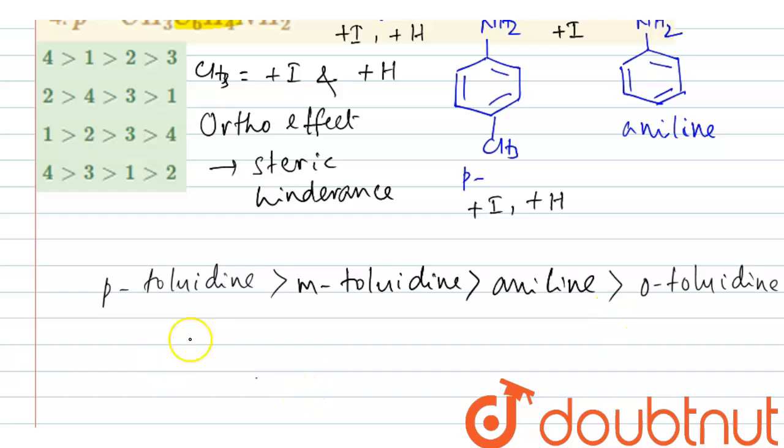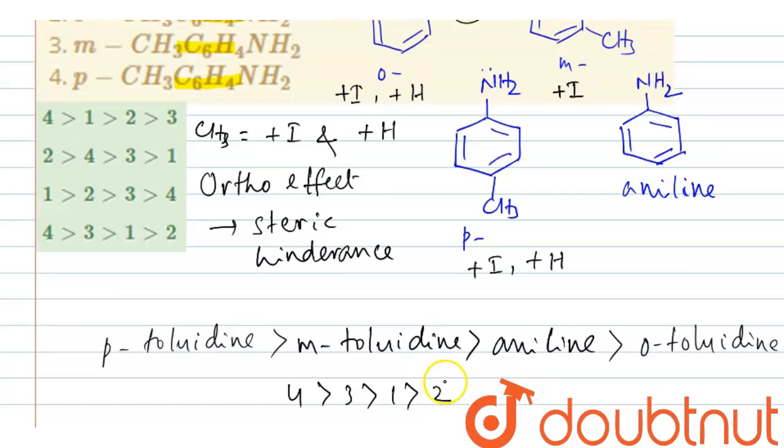Let us see now, paratoluidine is the fourth one. So 4 greater than meta is the third one and aniline is the first one and orthotoluidine is the second one. Therefore, the order is 4312 which is the fourth option. Therefore, fourth option is the correct option. Thank you.